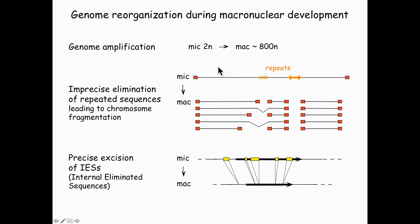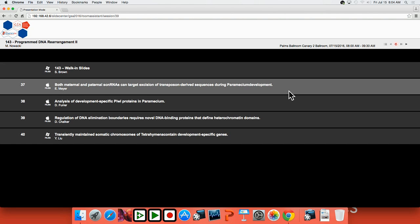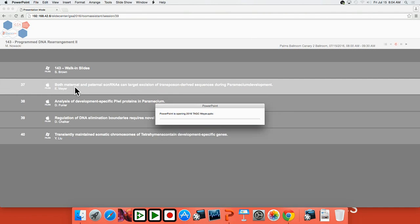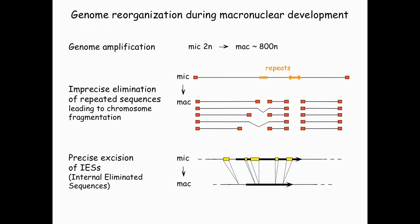During mac development, two main types of DNA rearrangements occur. The first type is fragmentation of mic chromosomes with the elimination of repeated sequences like mini satellites and transposons, which often result in the fragmentation of mic chromosomes. I will focus more on the excision of IESs, which are the short intervening DNA segments that you can find throughout the germline genome. Most of them in paramecium are inserted within coding sequences, so precise excision is really needed to reconstitute functional genes.